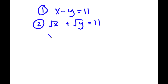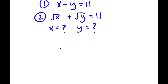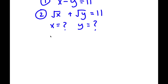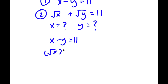For any system of equations, we want to find the value of x and the value of y. The first thing I'm going to do is rewrite our first equation, x minus y is equal to 11, as the square root of x squared minus the square root of y squared is equal to 11. The square root of x squared is the same thing as x because the square root and the power cancel out, and this is the same for the square root of y squared.